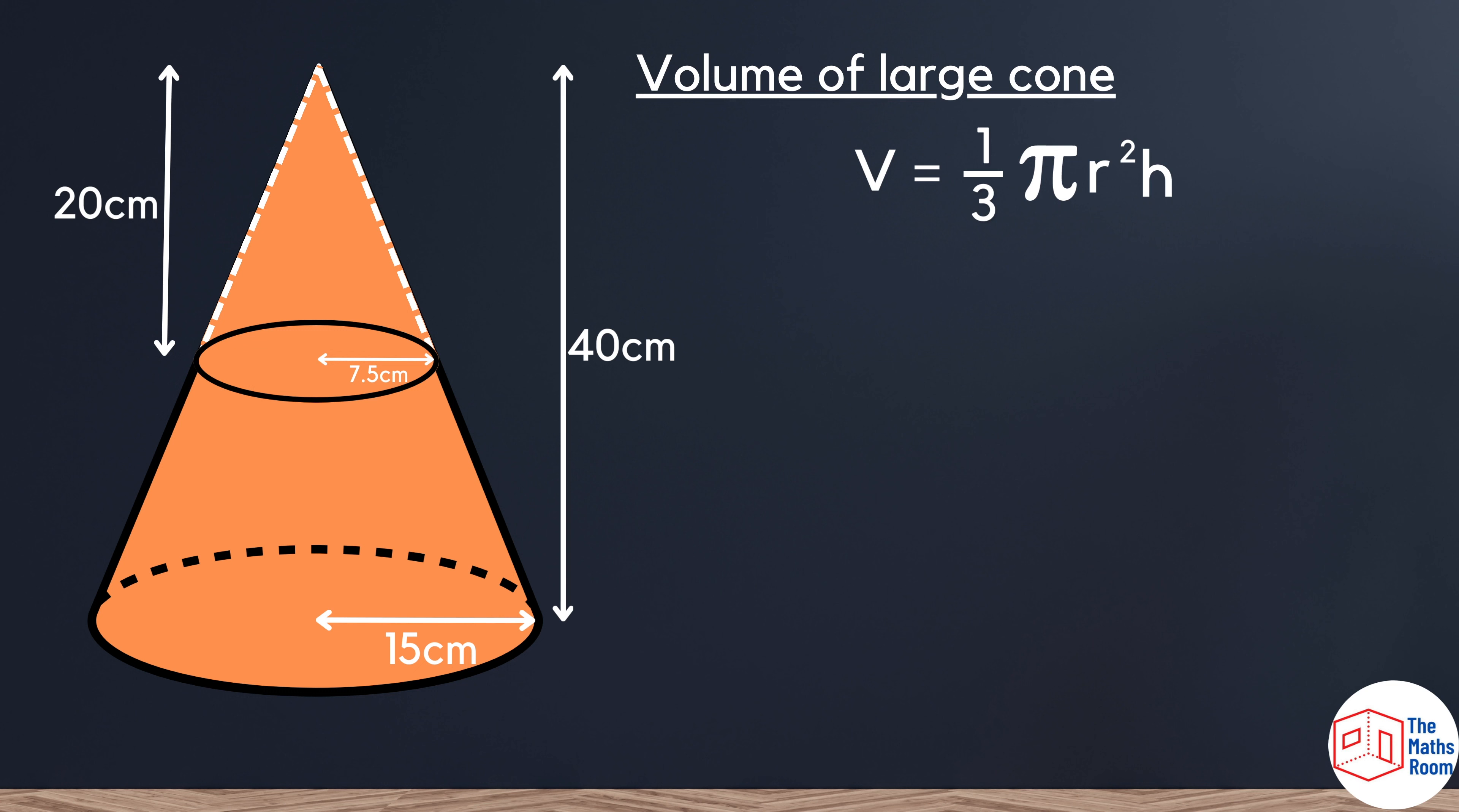Plugging in the missing variables, our radius is 15 and our height is 40. Calculating that out, we get 3000π. I'm going to leave it in this format to keep our accuracy high.